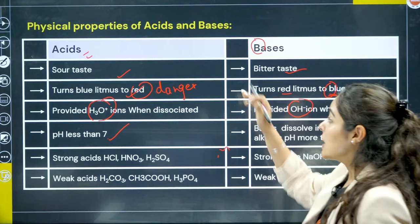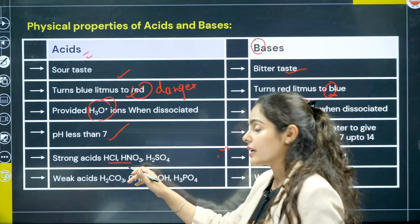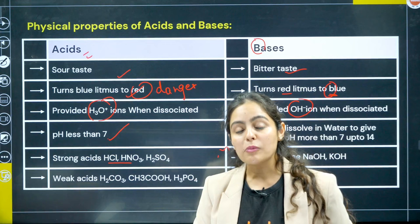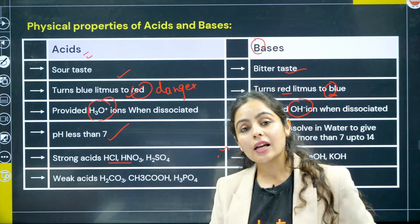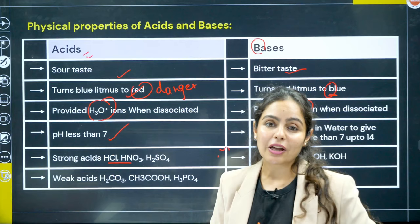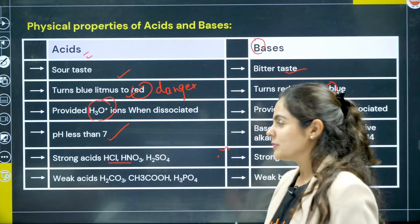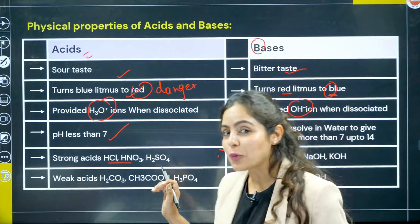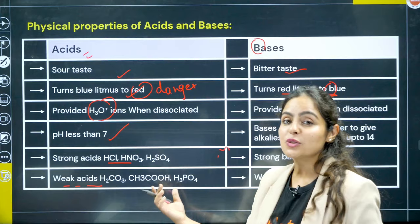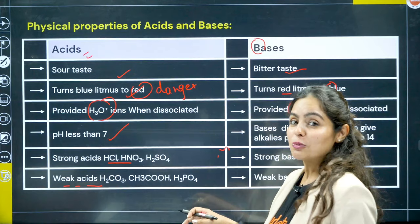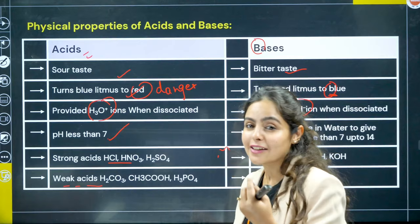For strong and weak acids — strong acids include HCl (hydrochloric acid), HNO3 (nitric acid), and H2SO4 (sulphuric acid). Note that HCl in liquid state is called hydrochloric acid, while in gaseous state it's called hydrogen chloride. Weak acids include citric acid, lactic acid, carbonic acid (which you drink in cold drinks), acetic acid found in vinegar, and H3PO4 (phosphoric acid).